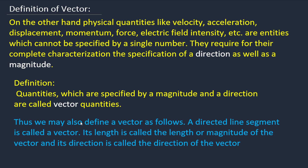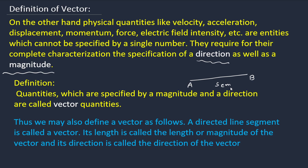The basic difference between scalar and vector is: in scalar we define a physical quantity by a single number, but in vector we need direction as well as magnitude. Quantities which are specified by both magnitude and direction are called vector quantities.